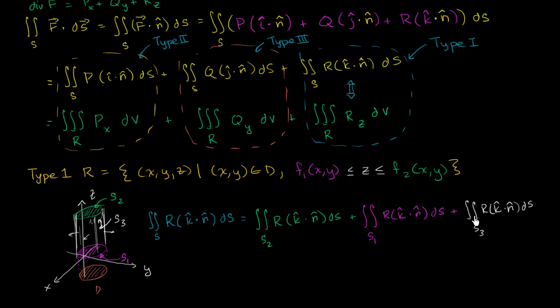So this thing is going to be 0, because k dot n is going to be 0 in this situation, for this surface. k dot n is going to be equal to 0.